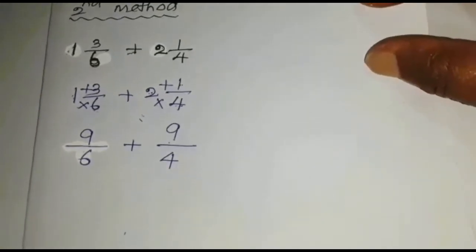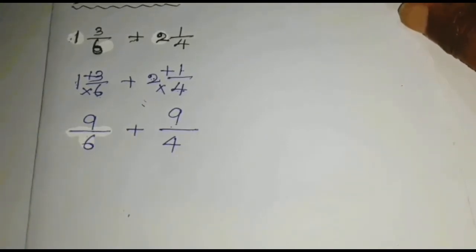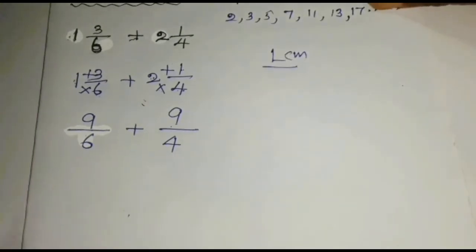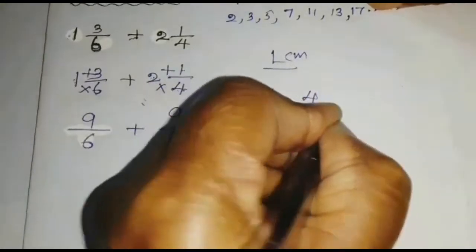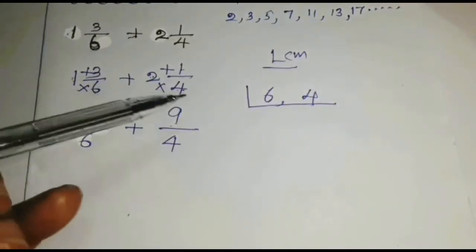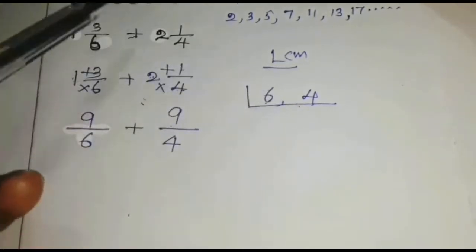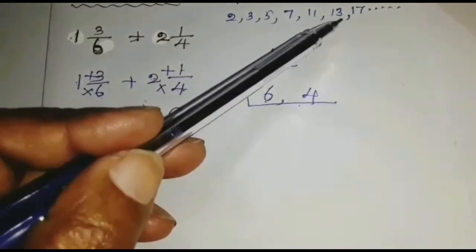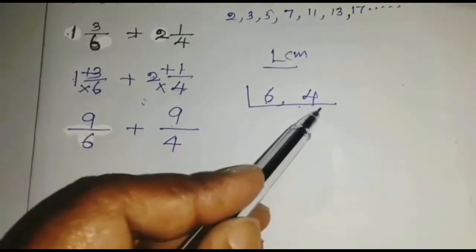Now, we can't add these fractions because denominators are different. So we have to get the common denominator. We have to find LCM. To find LCM, we have to divide denominators by prime numbers. Denominators are 6 and 4. Prime numbers are 2, 3, 5, 7, 11, 13, 17.